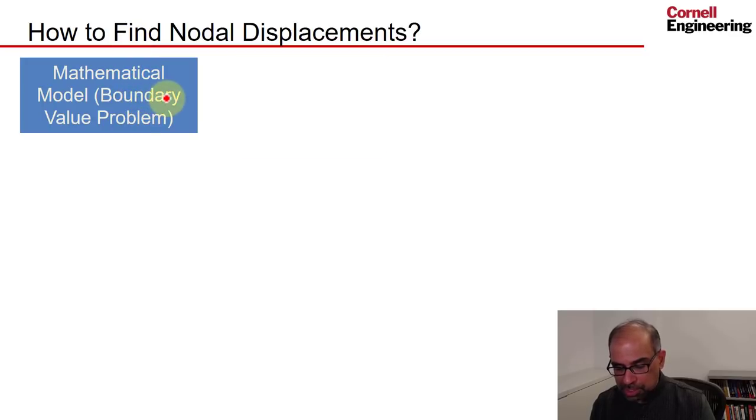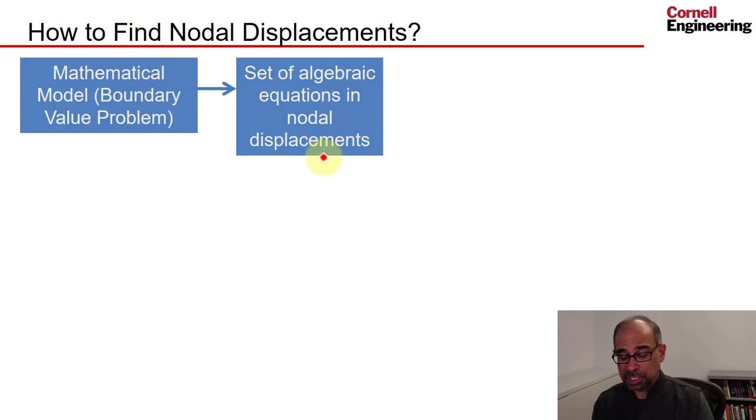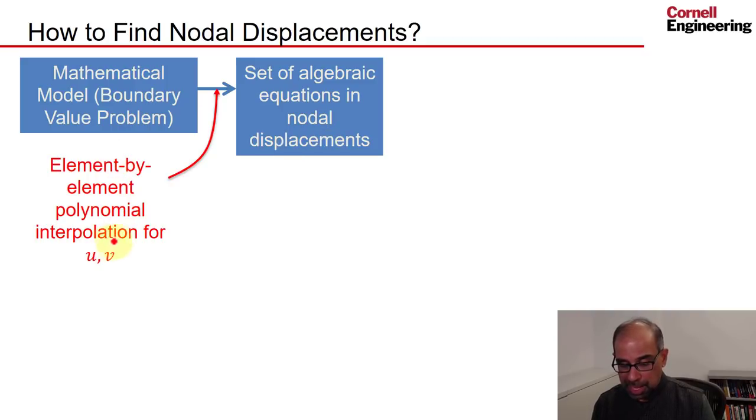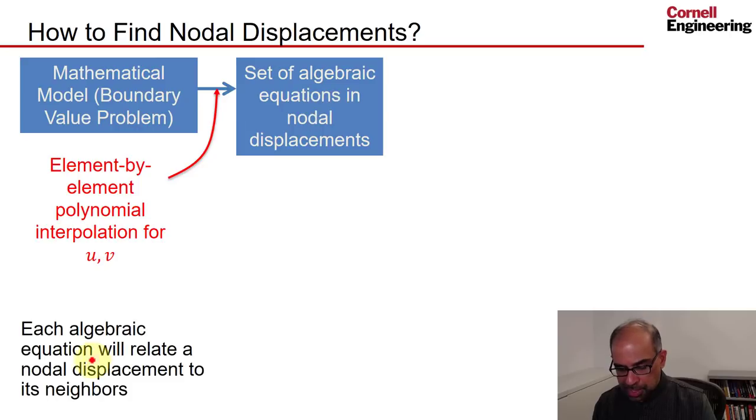We go from the boundary value problem to a set of algebraic equations in the nodal displacements using the element by element polynomial interpolation for U and V. There's a lot of detail there. ANSYS takes care of the details for us, so more power to it. Essentially, we are going from calculus to linear algebra.